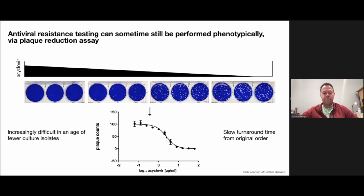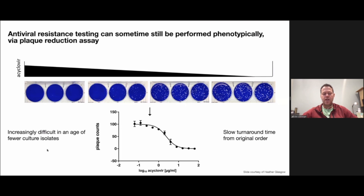The assay can be a little variable and difficult to execute. It requires a culture isolate, which is increasingly difficult now — for example, any swab taken for a genital lesion raises concerns about BSL-3 culture. The same applies to SARS-CoV-2 for respiratory specimens. But if you have those isolates, they can be submitted for phenotypic testing. It's also a challenge because of slow turnaround time.